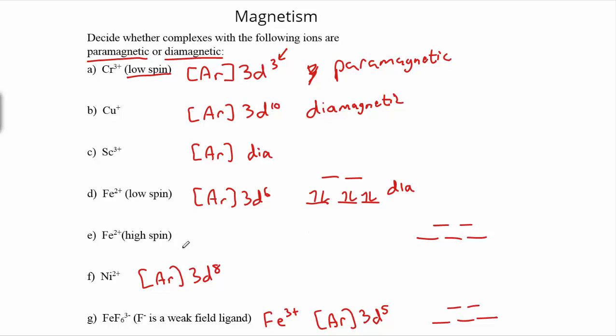Whereas if we do Fe²⁺ high spin, again, we've got to fill in six electrons, but now we'll go up high before ever pairing anything up. So in this case, we've got four unpaired electrons, and therefore this thing is going to be very paramagnetic.